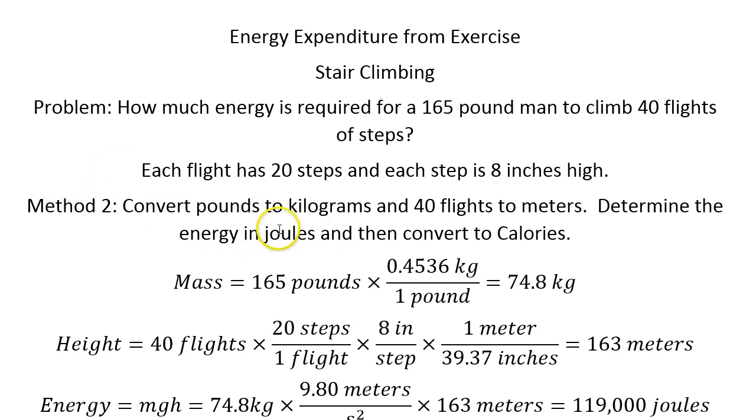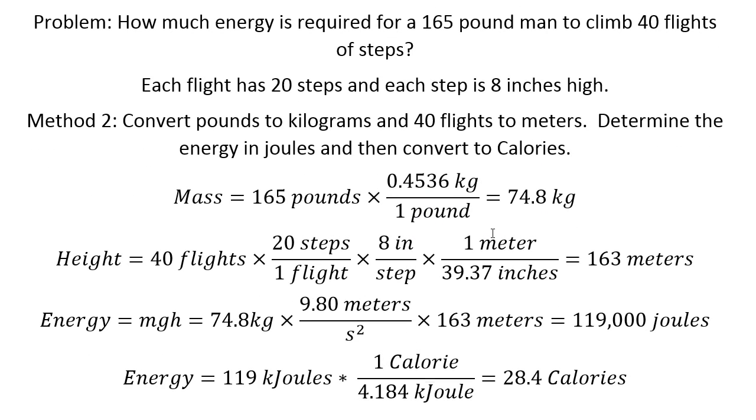So here we're going to convert the pounds to kilograms, the flights to meters, and determine the energy in joules and then convert to calories. All right, so let's begin. The mass is 165 pounds times 0.4536 kilograms per pound gives you 74.8 kilograms. That's the mass.